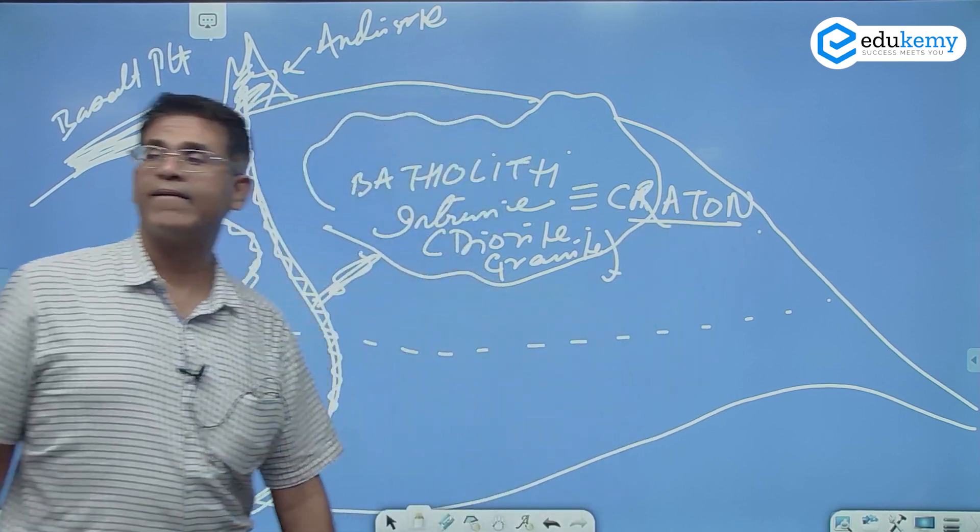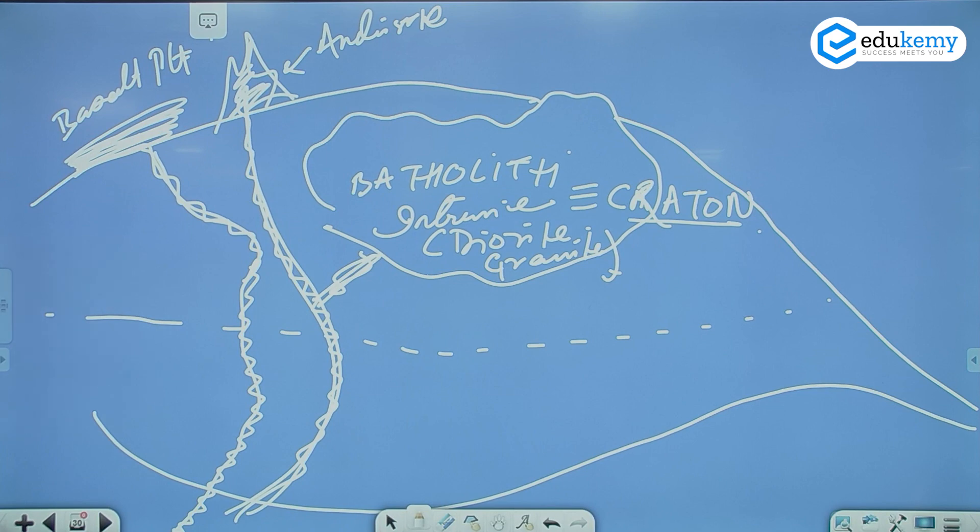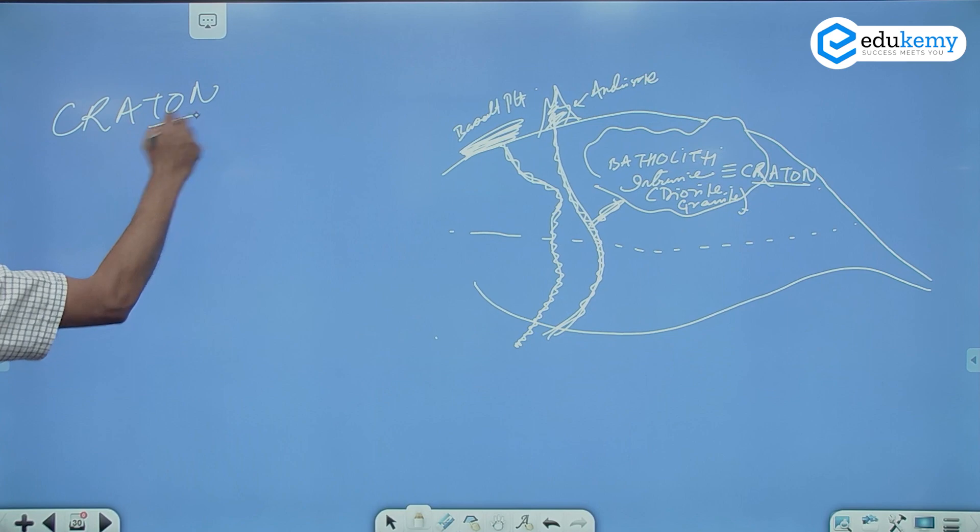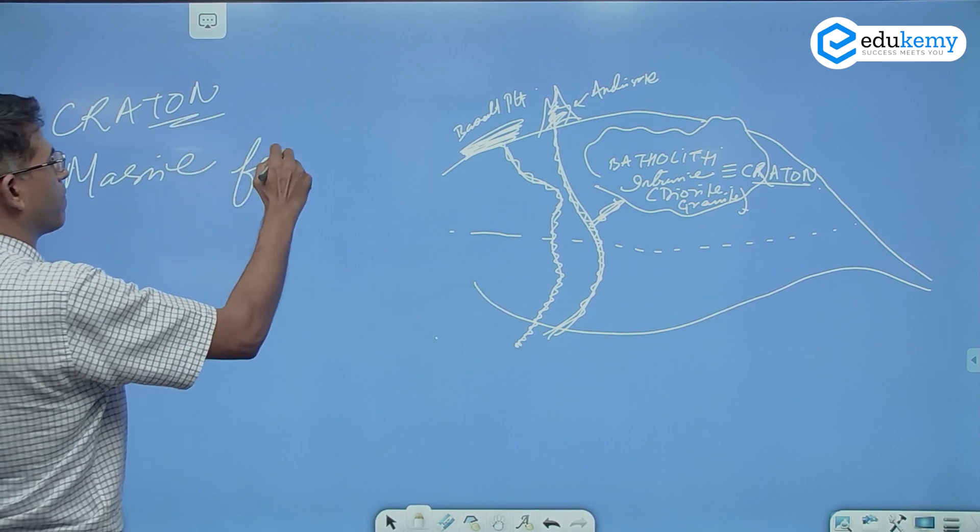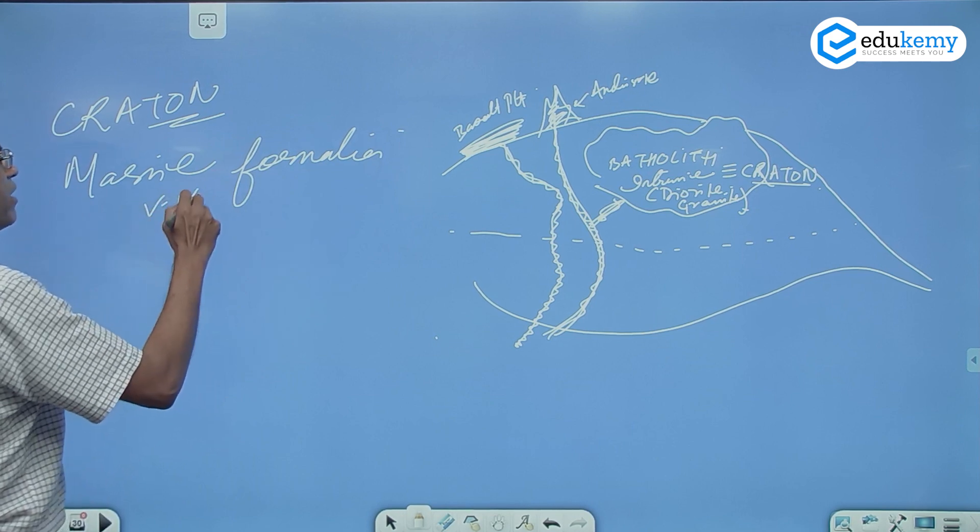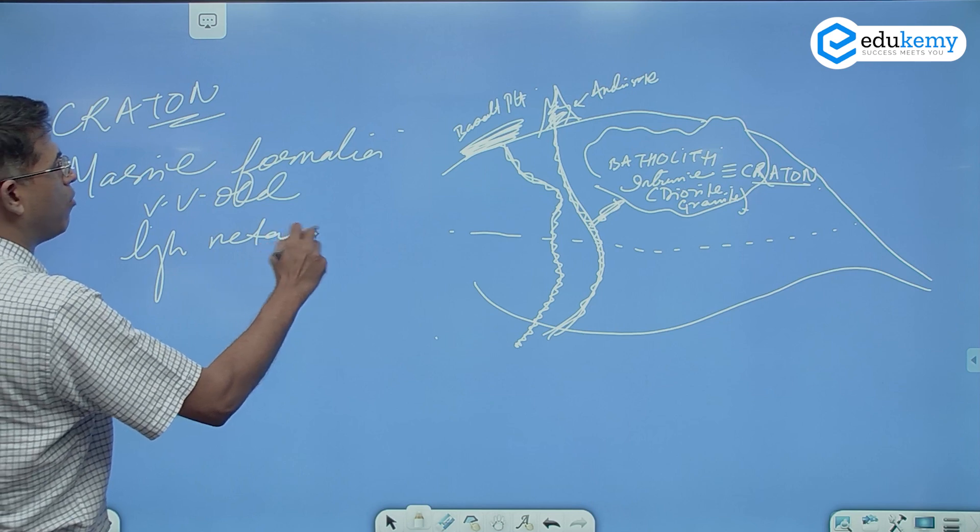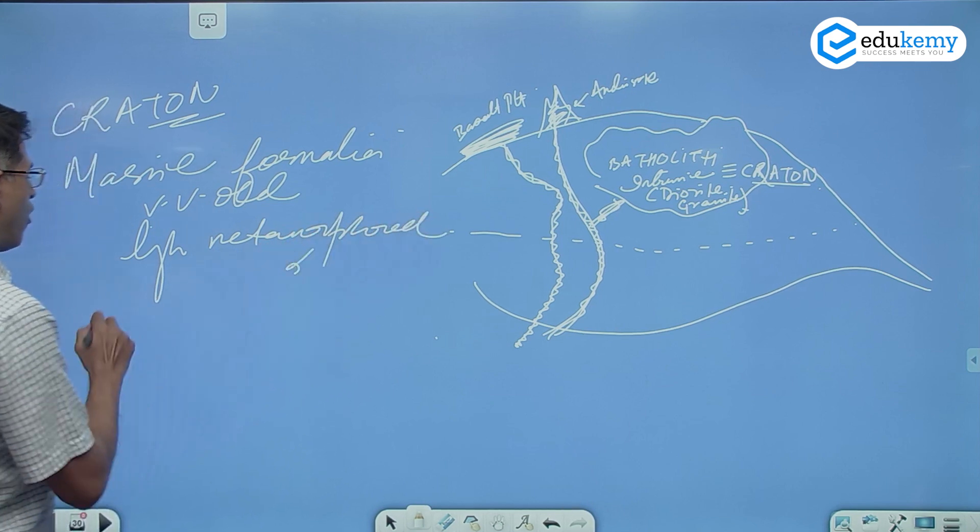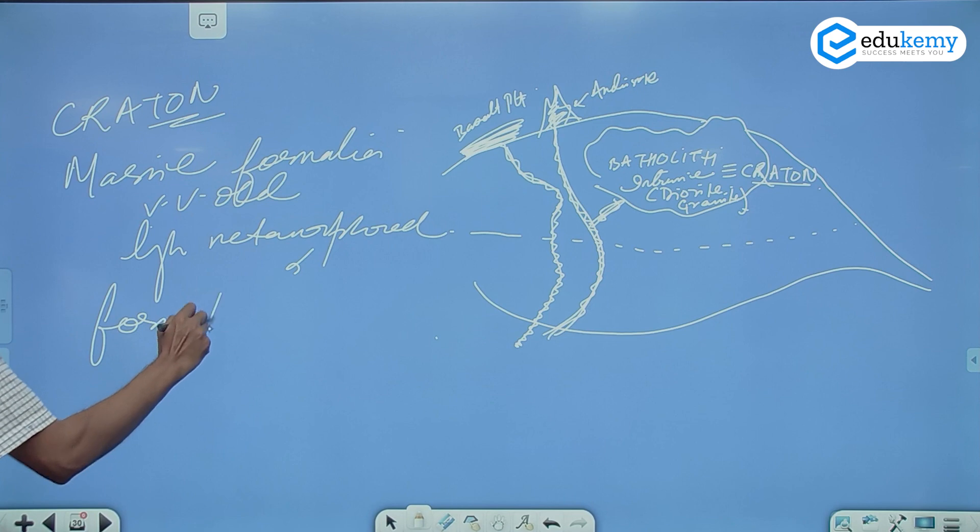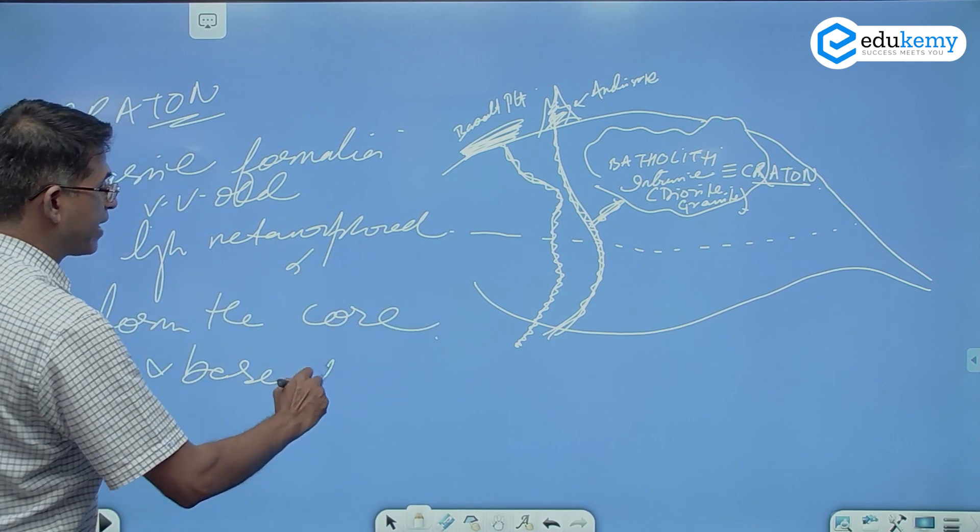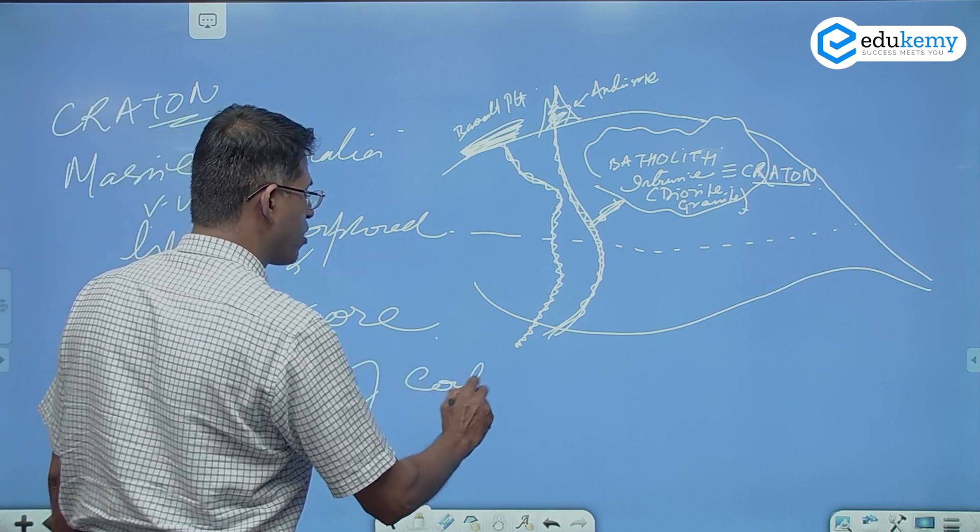What's Craton? A very, very old, highly metamorphosed, massive formations inside the Earth's continent. What's a Craton? Craton is a massive formation, very, very old, highly metamorphosed and forms the core and the basement of the continents.